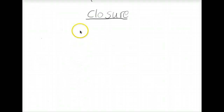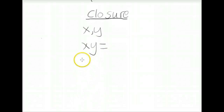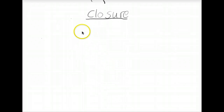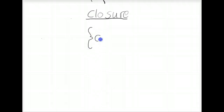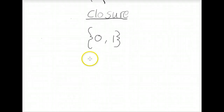What that is saying is that if we have two real numbers x and y, x times y is going to give a unique real number, just as x plus y is going to give a unique real number. We can actually take the closure property even further by saying that a certain set is closed under a certain operation. For example, let's say we have the set {0, 1}.